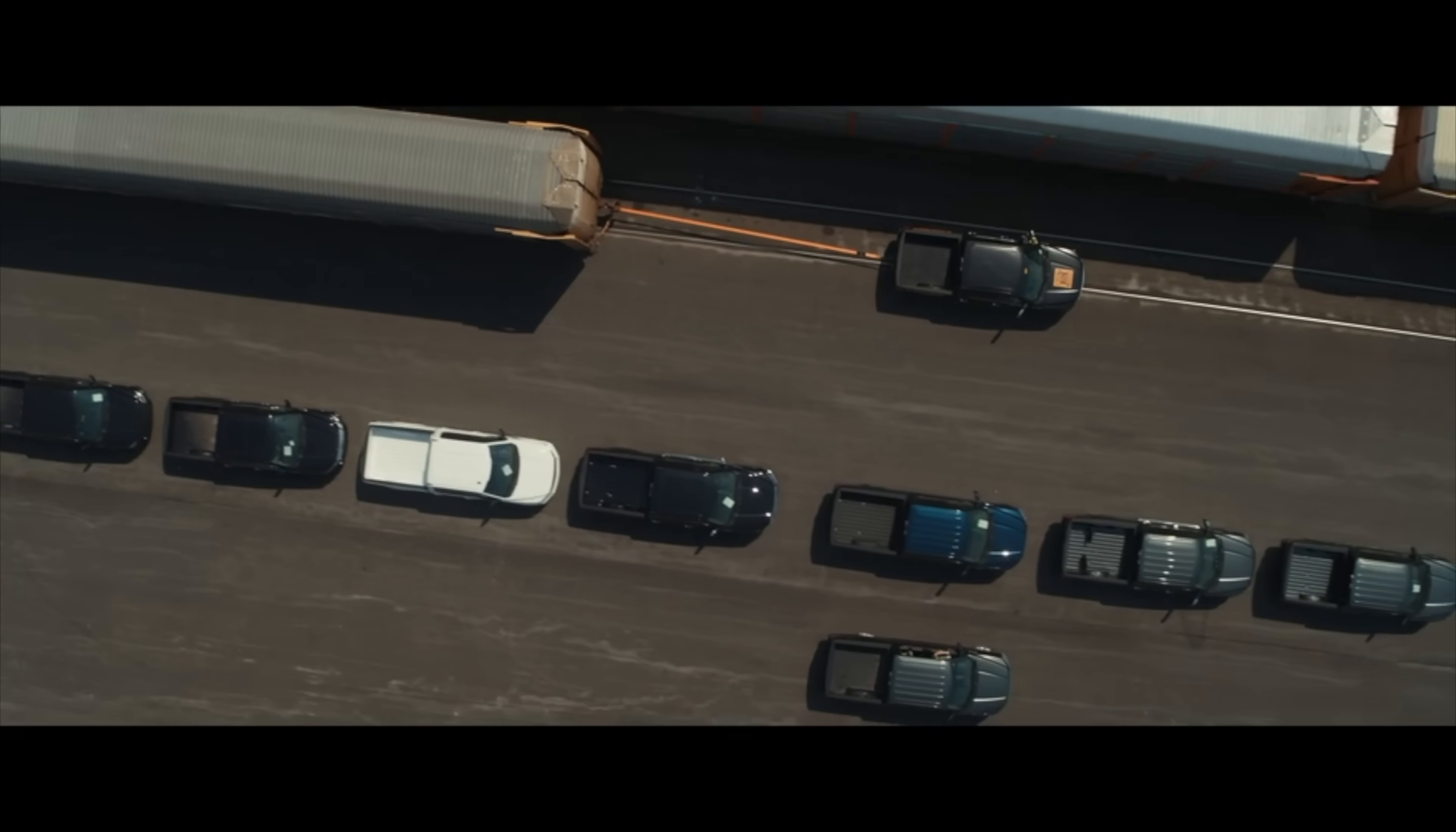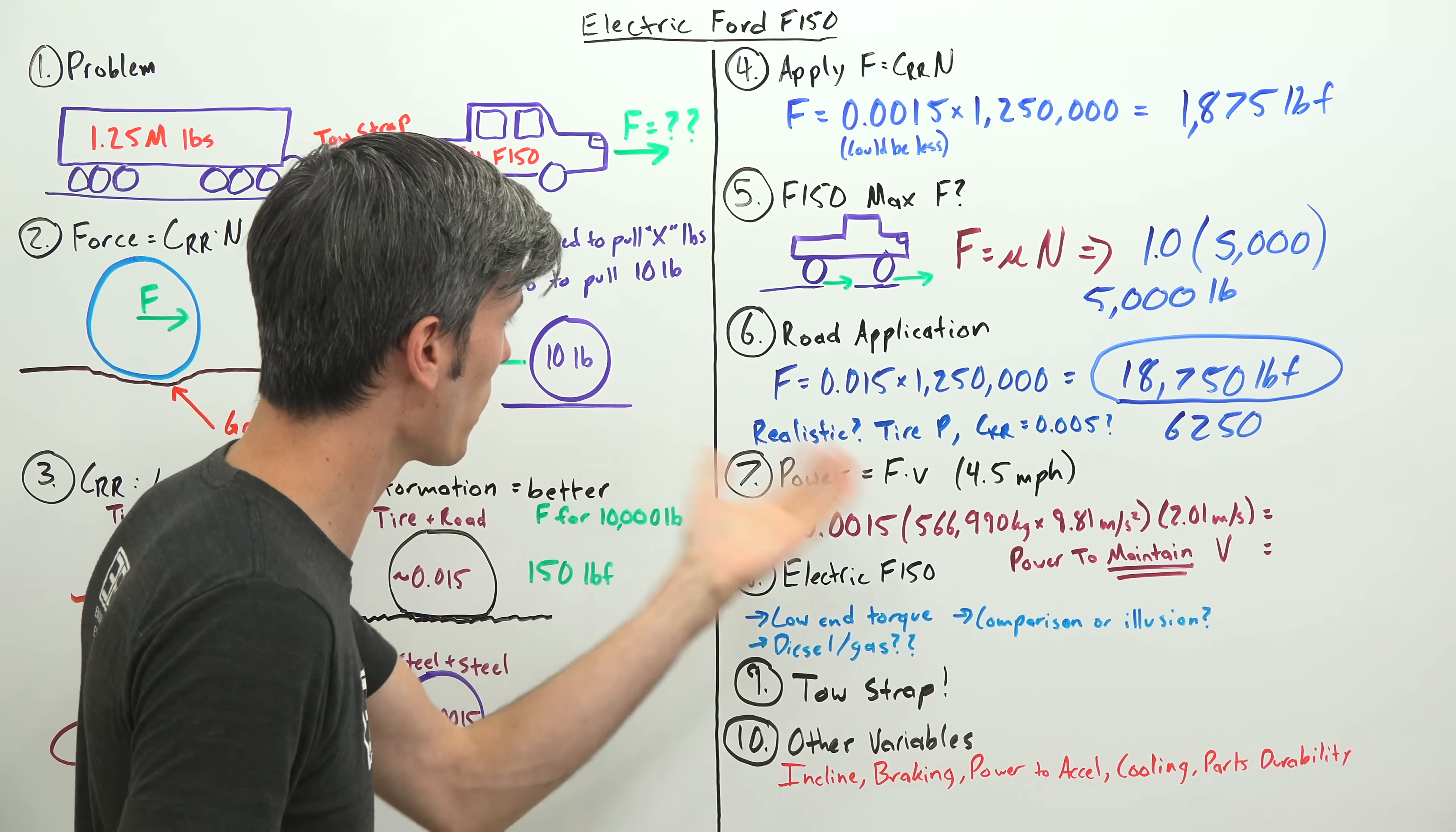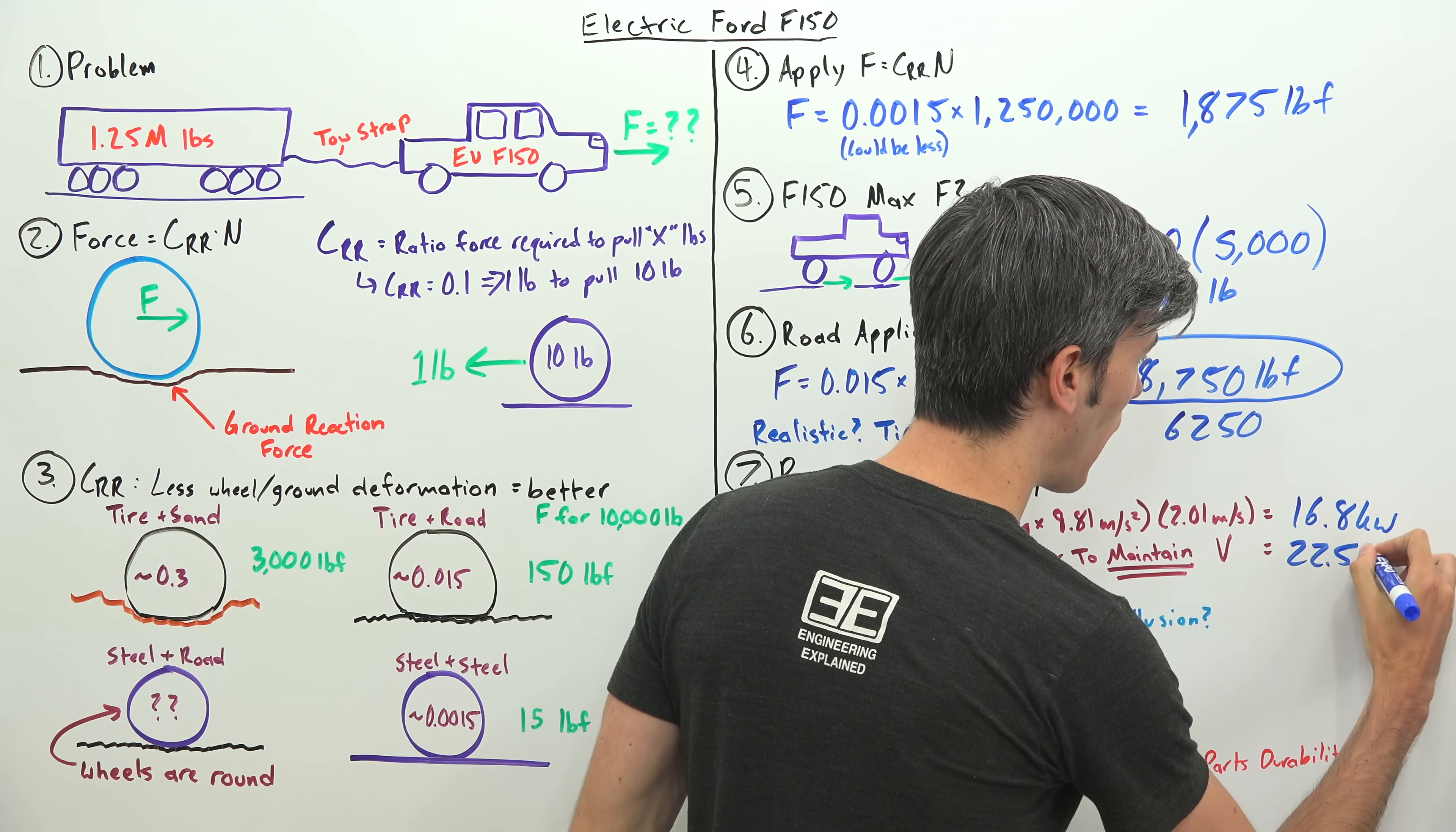Now here's what I think is the most mind-blowing thing about all of this. In the video, Ford states that they are traveling at 4.5 miles per hour. So that got me wondering, how much power is actually needed to travel at 4.5 miles per hour with a 1.25 million pound load? Thankfully the equation is pretty simple. To find power, we simply multiply force by velocity. We've already calculated our force and our velocity is 4.5 miles per hour.